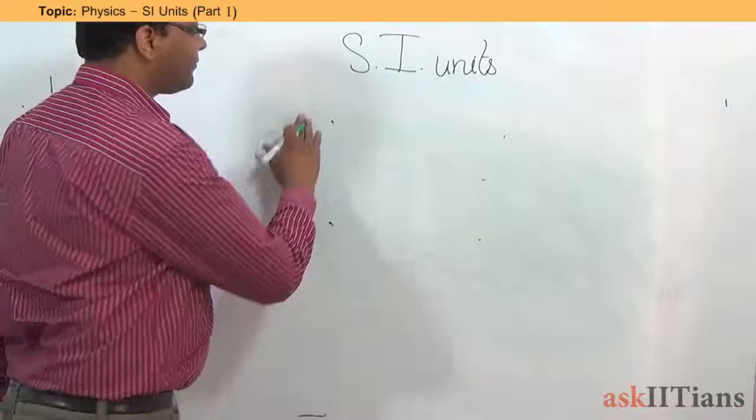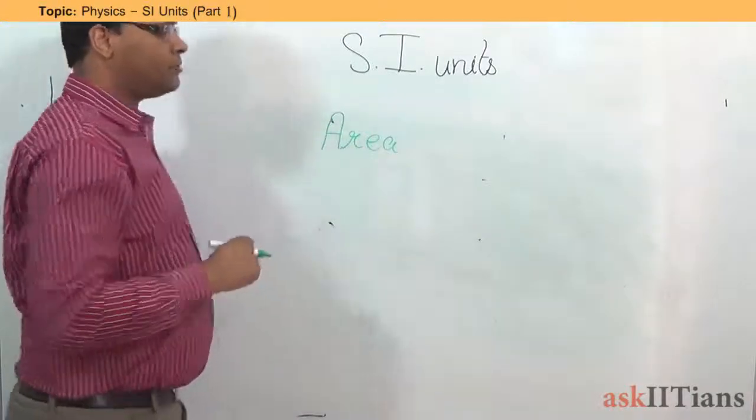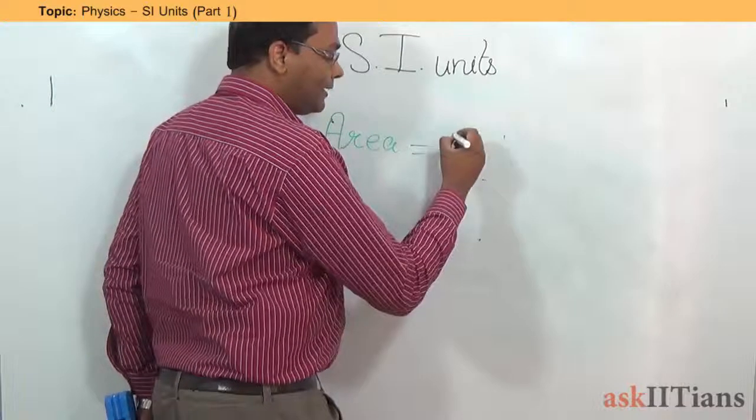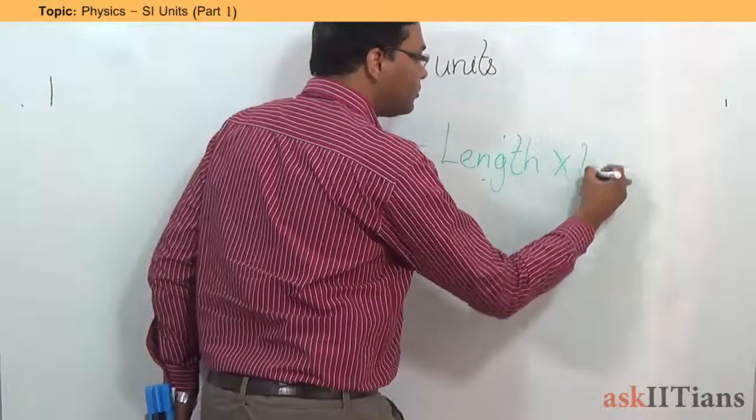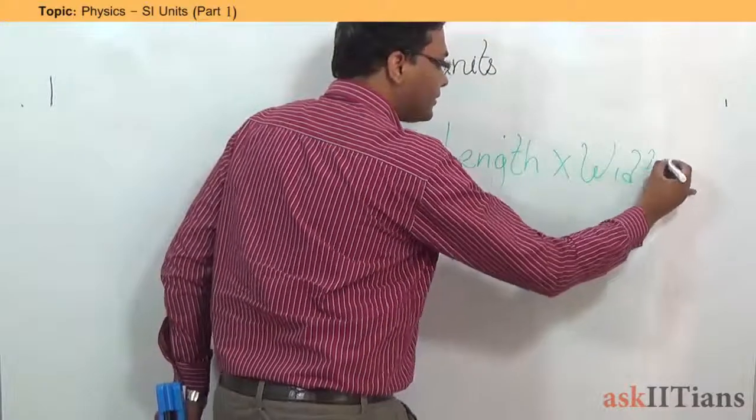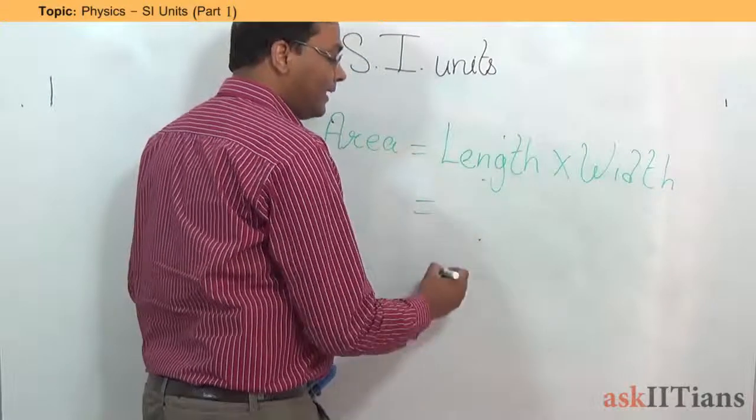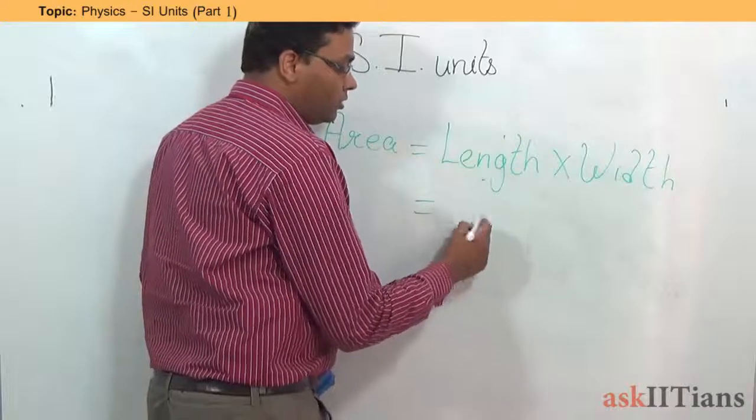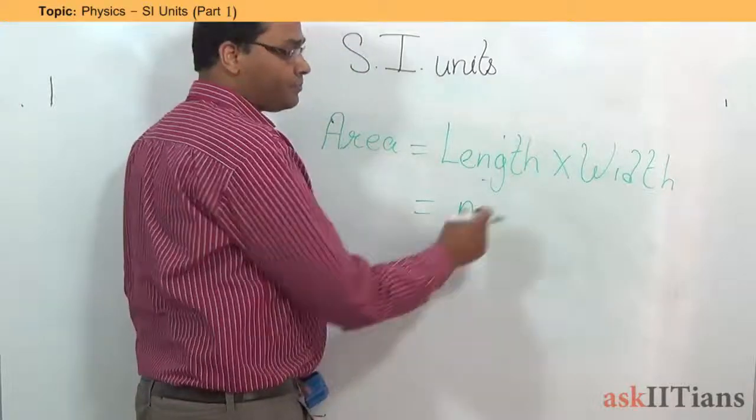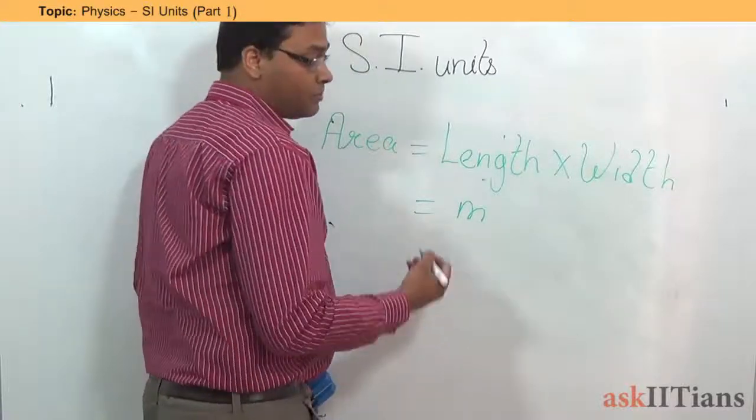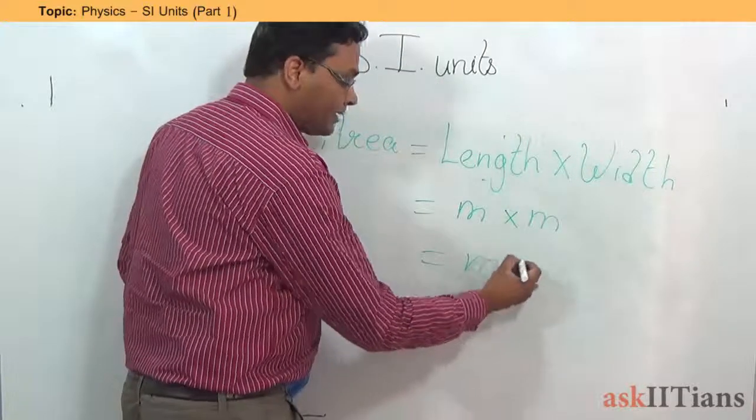Let's see. We start off with area. Area we define as equal to length into the width. Now, how exactly you are going to measure the length? You will be measuring length in meters. So, when you measure it in meters, you will say meter here. And width also you will be measuring in meters. So, effectively the unit is going to be defined as meter square.